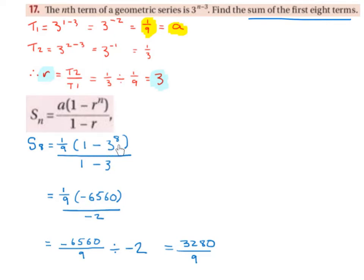1 minus 3 to the power of 8 is minus 6560, and 1 minus 3 is minus 2. So 1 ninth multiplied by minus 6560 gives us minus 6560 over 9, divided by minus 2.